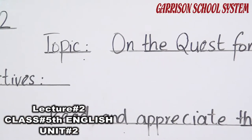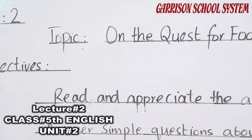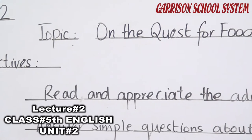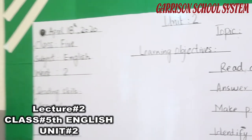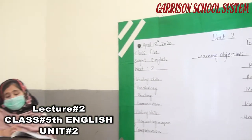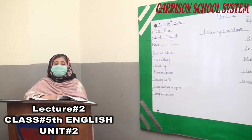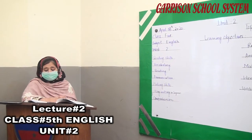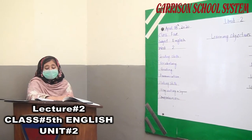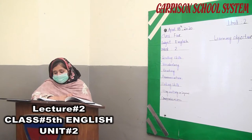Let's come to the topic. This excerpt is taken from the famous story of Robinson Crusoe, who was marooned on an island. The story is about Crusoe's extraordinary attempts to stay alive before he was rescued years later.